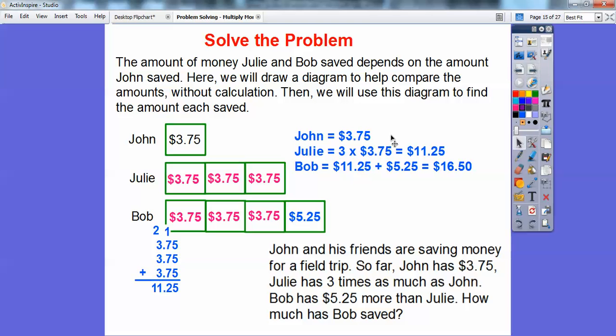So John saved $3.75. Julie saved three times $3.75, and I added those up over here. Five plus five is 15, so carry that one, and it ends up being $11.25 how much Julie saved. And then Bob saved what Julie saved plus the $5.25. So he saved $16.50. Bob saved $16.50.